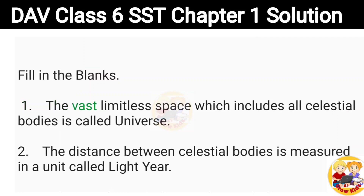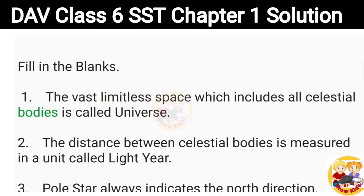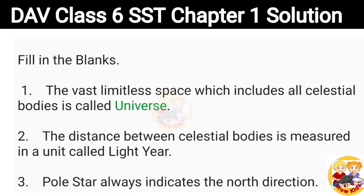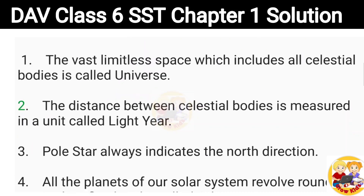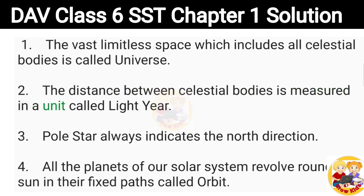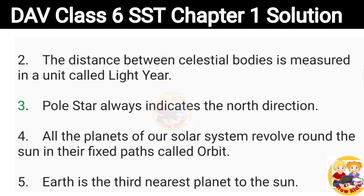Fill in the blanks. 1. The vast limitless space which includes all celestial bodies is called universe. 2. The distance between celestial bodies is measured in a unit called light year. 3. Pole star always indicates the north direction.